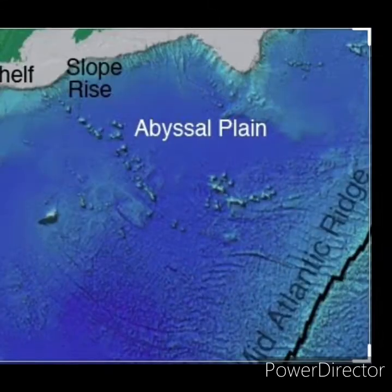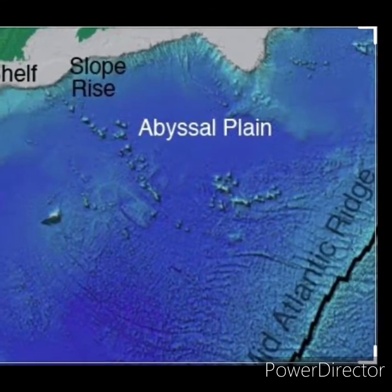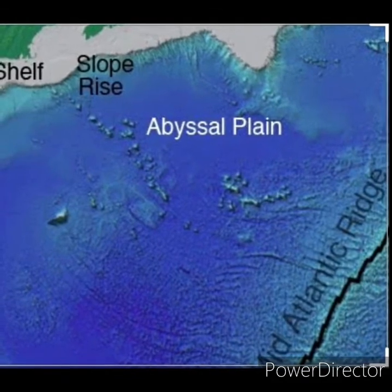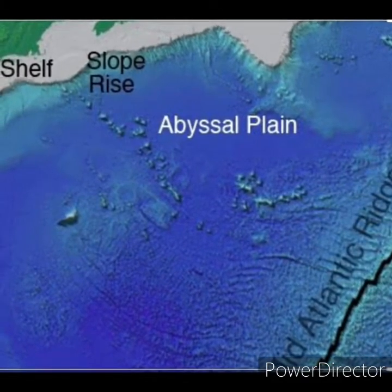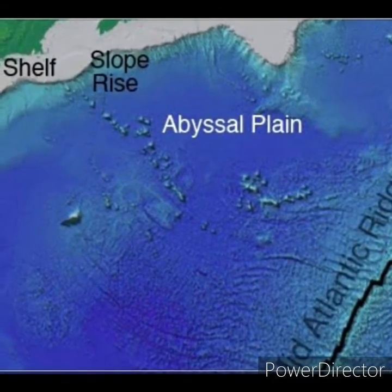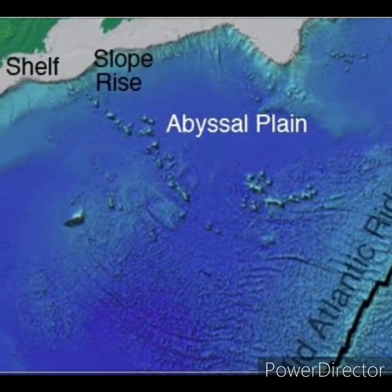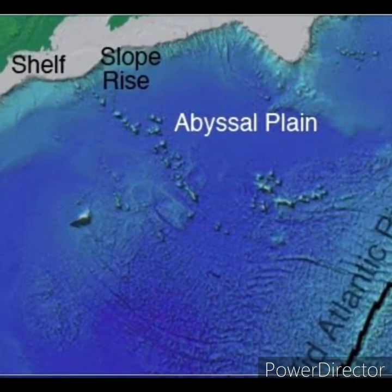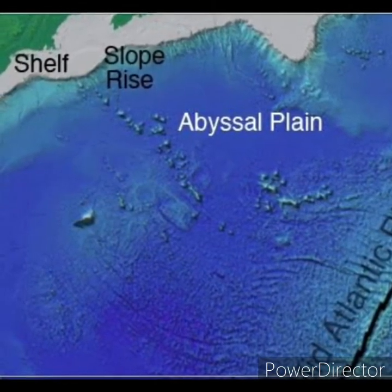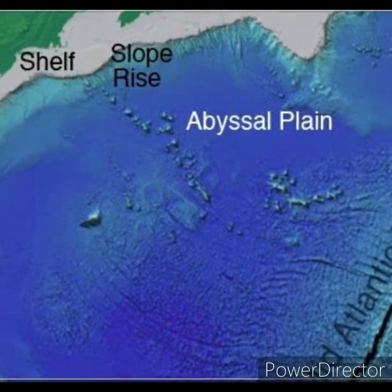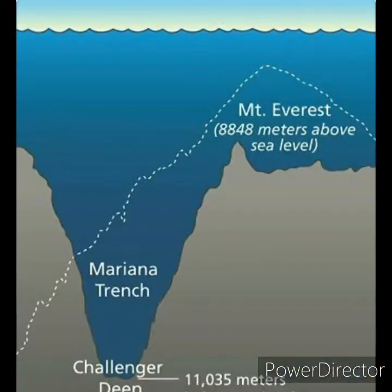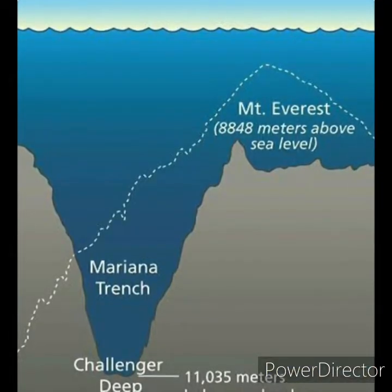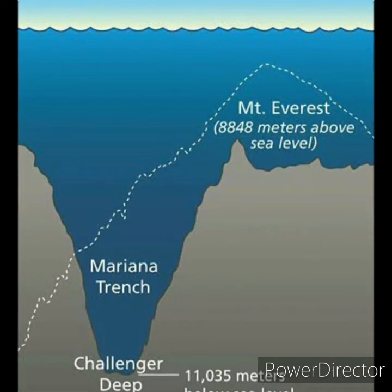Abyssal plains in the Atlantic and Indian Oceans tend to be more extensive than in the Pacific Ocean because the majority of the world's largest rivers empty their sediments into either the Atlantic or Indian Ocean.